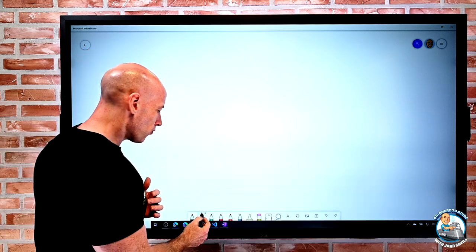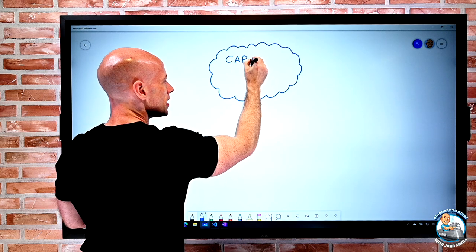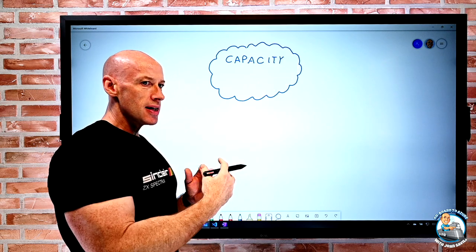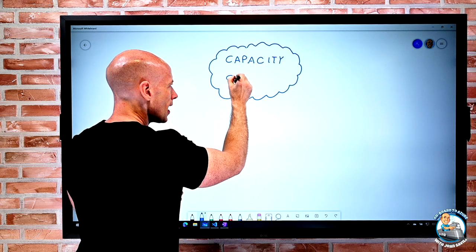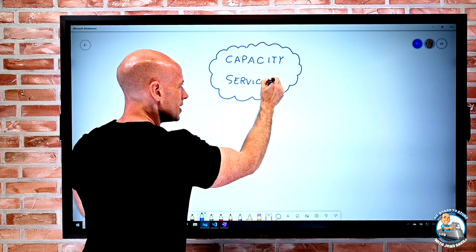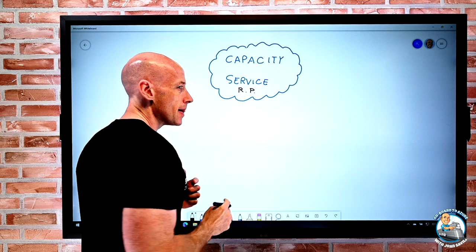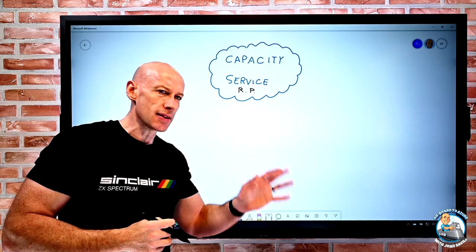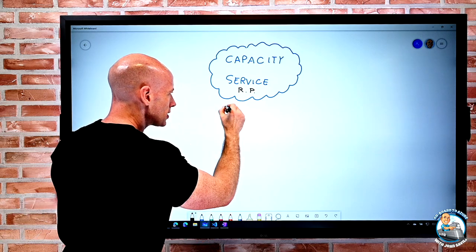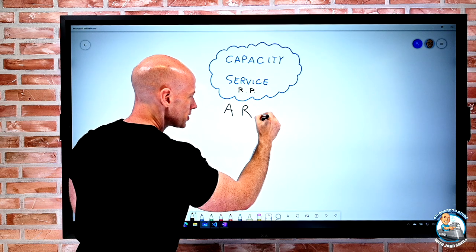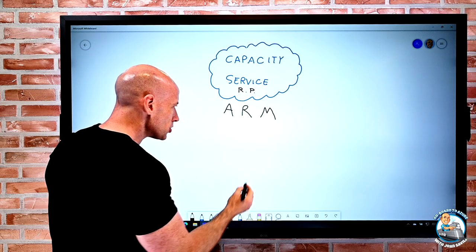Azure is fundamentally built around capacity, built up over regions that have network, storage, compute, and all those things. Through that capacity, Azure offers various types of service. Those services are made up from resource providers — there's a compute resource provider that has VMs, VM scale sets, and disks; there are network resource providers. The way we interact with all of this is through Azure Resource Manager, ARM, which has the management.azure.com endpoint.